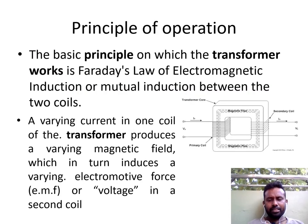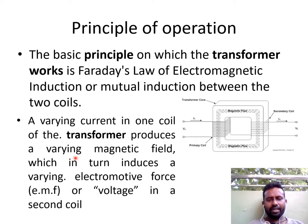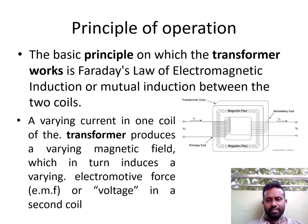What is the basic principle behind the operation of the transformer? The basic principle on which a transformer works is Faraday's laws of electromagnetic induction, or mutual induction between the coils. A varying current in one coil of the transformer produces a varying magnetic field, which in turn induces a varying electromotive force or voltage in the secondary coil. If you apply an alternating voltage to the primary, it will set up an alternating current which sets up a magnetic field linking with both the coils, and as a result a secondary EMF is induced in the secondary coil. This is the mutual induction process.